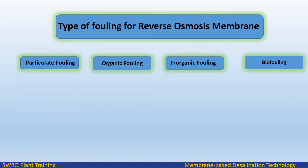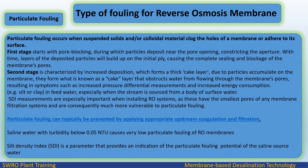There are mainly four types of fouling for Reverse Osmosis membranes: Particulate Fouling, Organic Fouling, Inorganic Fouling, and Biofouling. Particulate Fouling occurs when suspended solids and/or colloidal material clog the holes of a membrane or adhere to its surface.